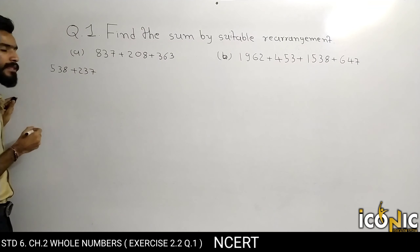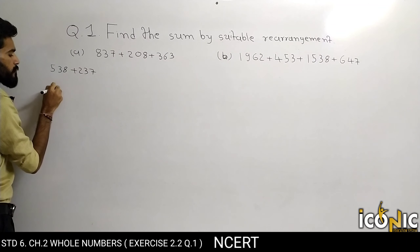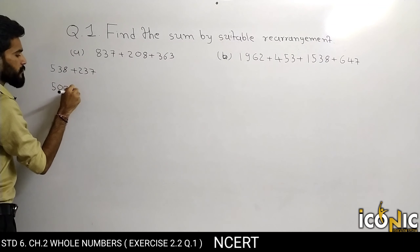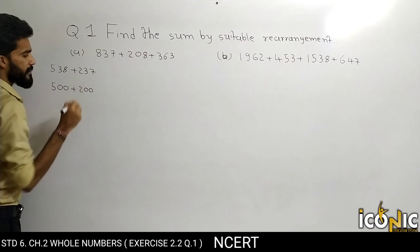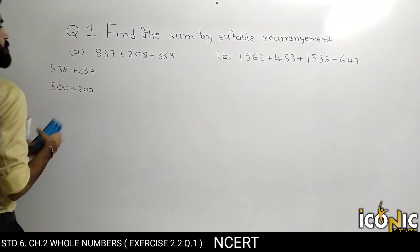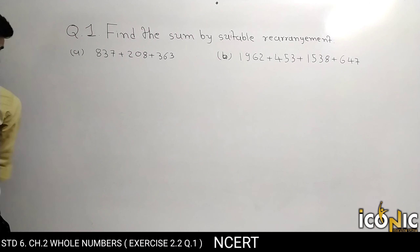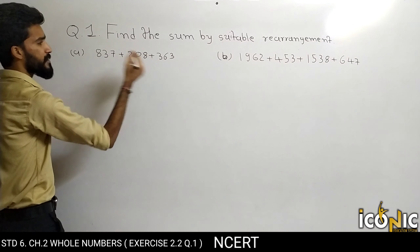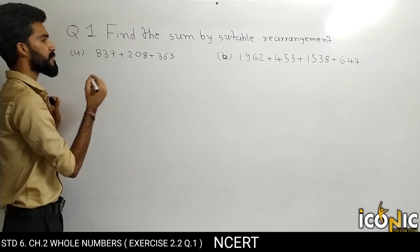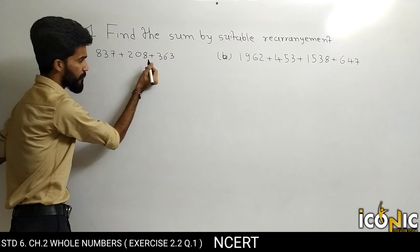For example, suppose we are adding 538 plus 200 — 500 plus 200 is easy. Jab bhi kisi number ke peeche 0 hoga, to uska addition karna hamare liye easy hoga. So, same — isi phenomenon ka use karke hum is saare examples karenge. Chalo dekhte hain kya hoga.